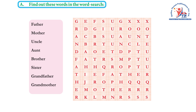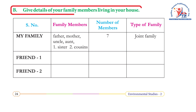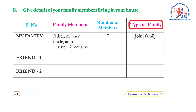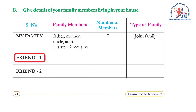Activity A: find these words in the word search — father, mother, uncle, aunt, brother, sister, grandfather, grandmother. Activity B: give details of your family members living in your house. Example: family members — father, mother, uncle, aunt, sister, cousins; number of members — seven; type of family — joint family.